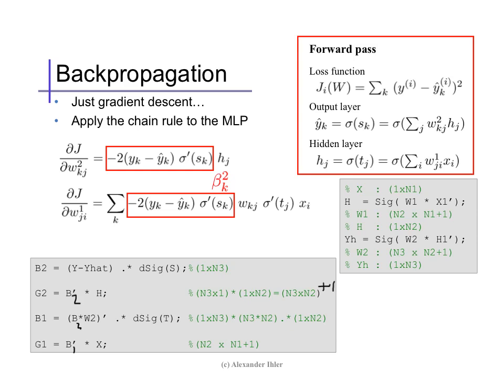Overall, this gives us the gradient of the entire system — the gradient of the weights at the second and first layer together. Using this gradient, we can do gradient descent or stochastic gradient descent just by repeatedly updating our parameter vectors and recomputing the gradient.